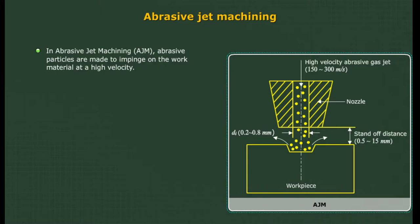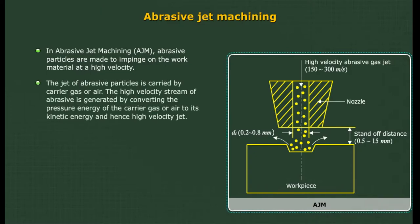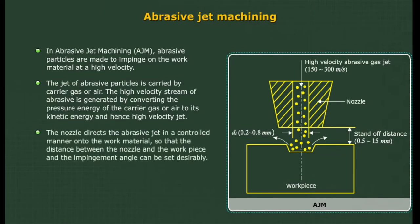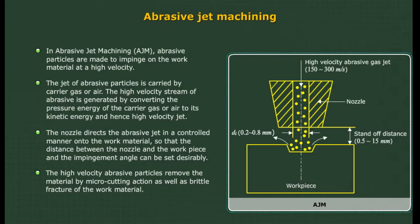In abrasive jet machining, abrasive particles are made to impinge on the work material at a high velocity. The jet of abrasive particles is carried by carrier gas or air. The high velocity stream of abrasive is generated by converting the pressure energy of the carrier gas to kinetic energy, producing a high velocity jet. The nozzle directs the abrasive jet onto the work material so that the stand-off distance and impingement angle can be set desirably. The high velocity abrasive particles remove material by micro cutting action as well as brittle fracture.